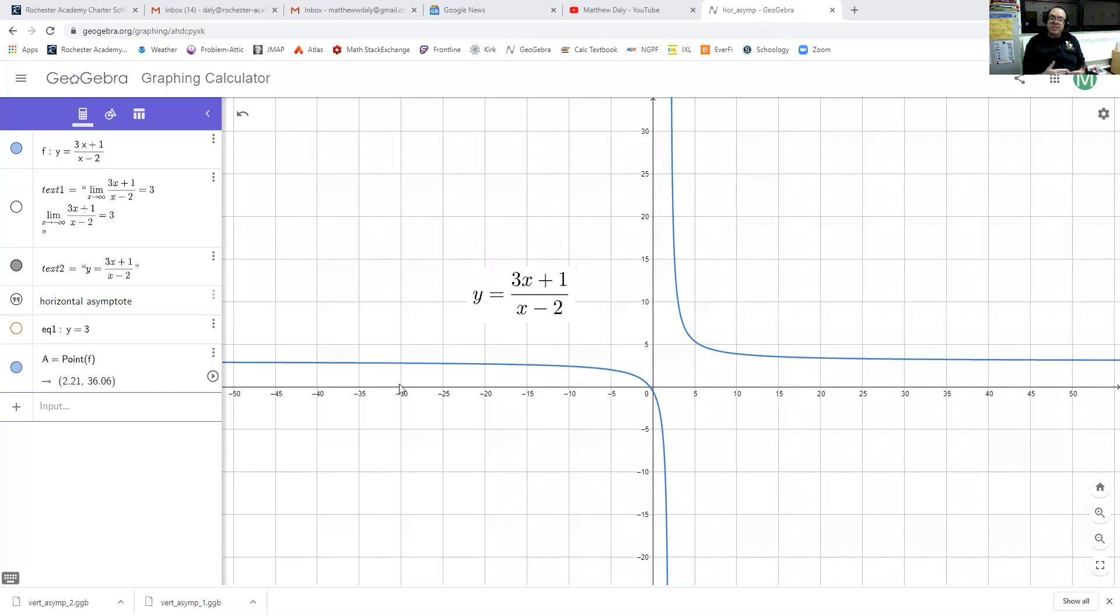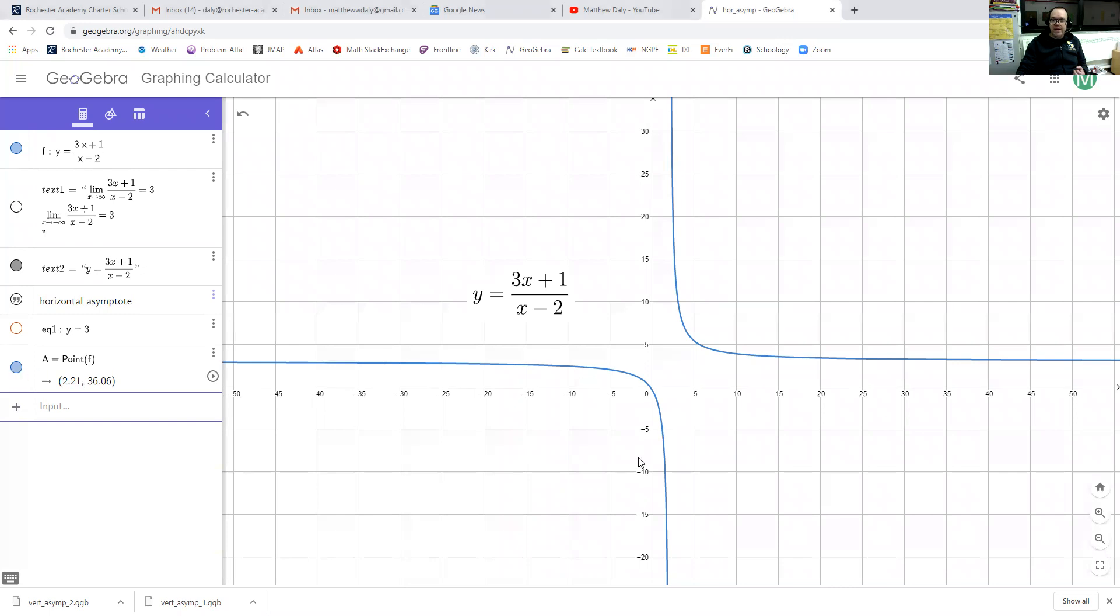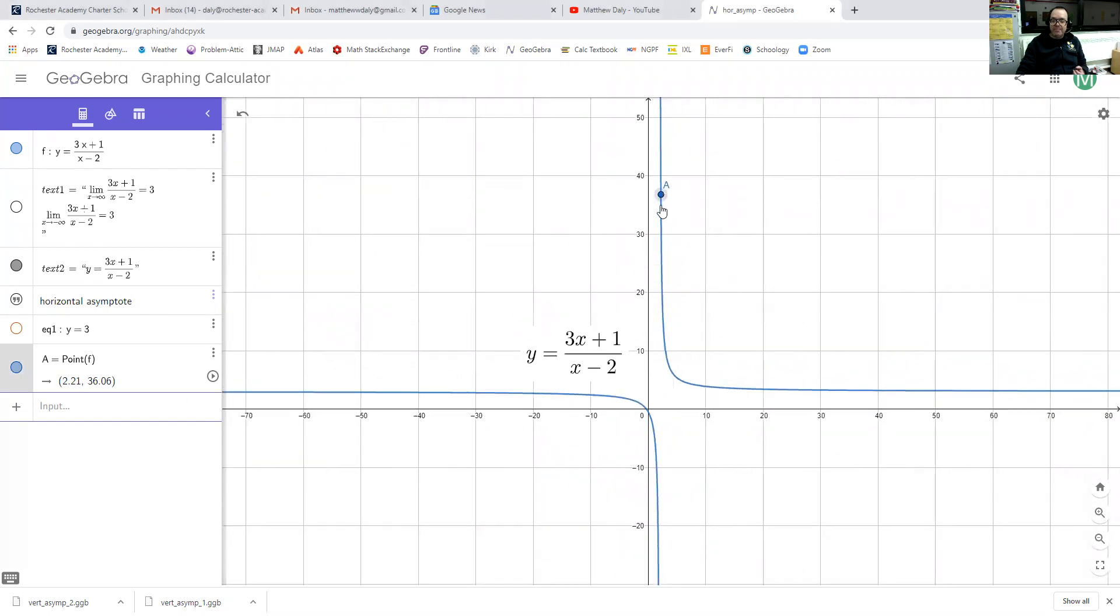I'm looking at the same rational function that we started off looking at in the last video, which is y equals 3x plus 1 over x minus 2. So we've got point A, except that this time I want to see what's happening as A is moving off to the right.